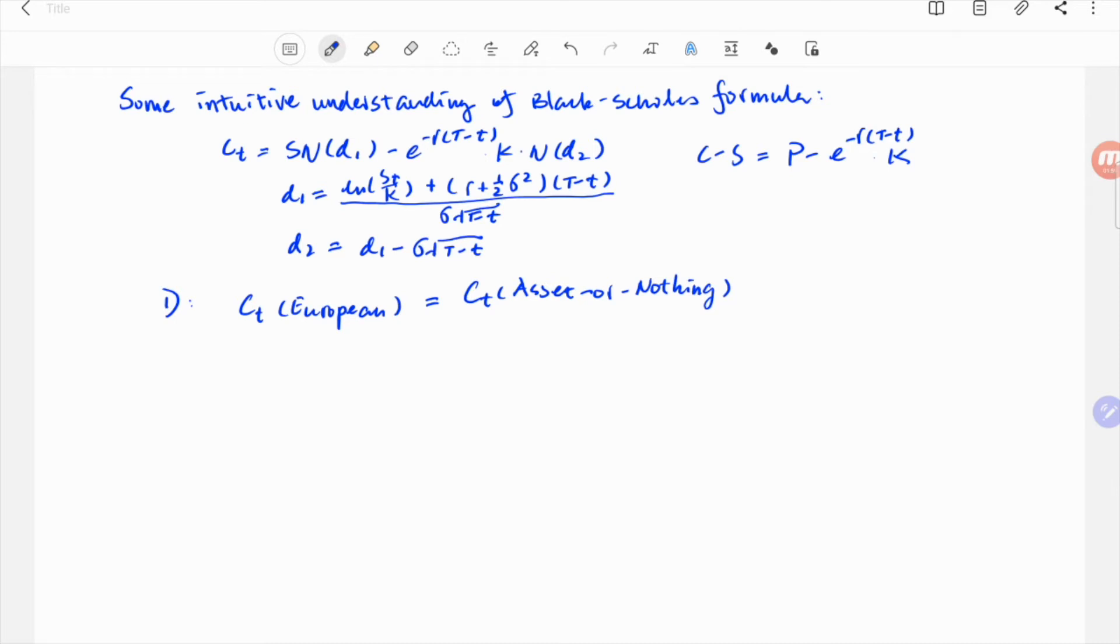Now imagine the payoff is to get the amount of cash with the strike price K if S is above K, in which case the option is called cash or nothing.